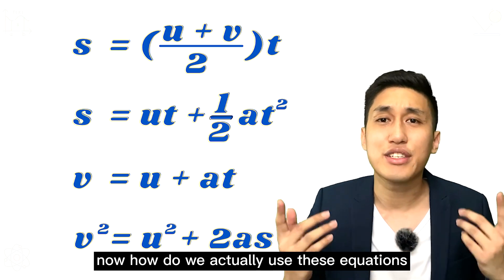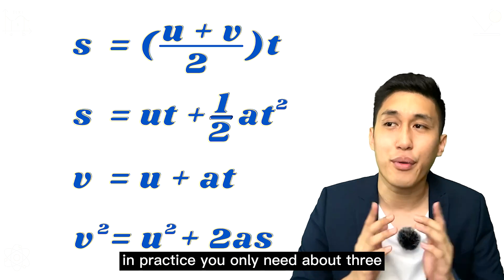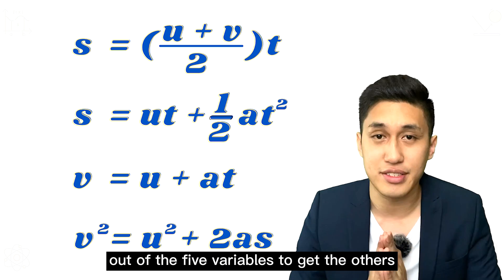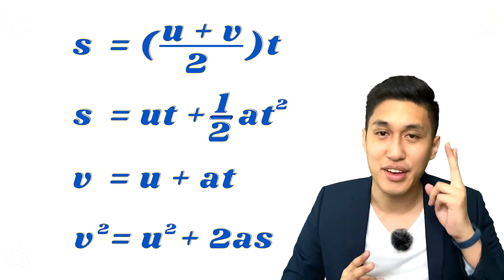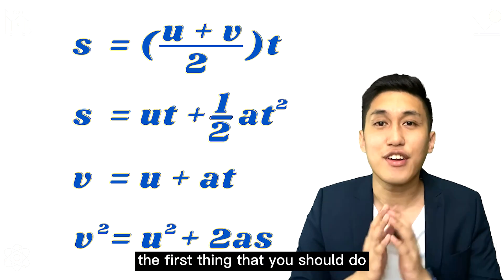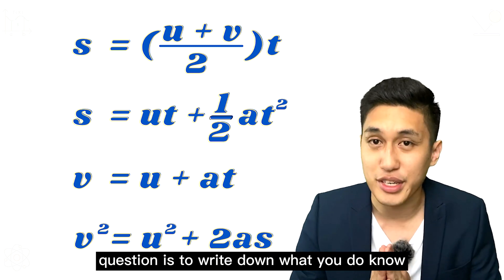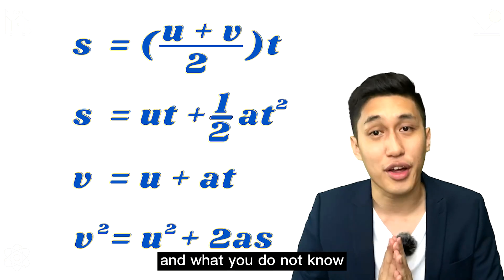Now, how do we actually use these equations? In practice, you only need about 3 out of the 5 variables to get the others. That's right, it's a buy 3, free 2. The first thing that you should do when you realize that you've stumbled upon a SUVAT question is to write down what you do know and what you do not know.